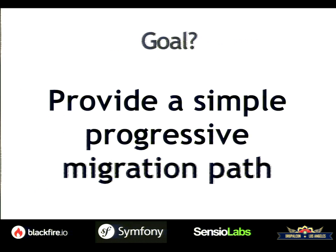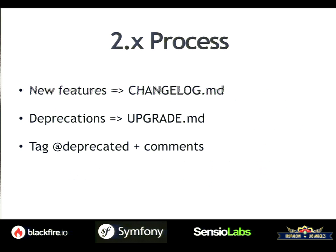We want to provide a simple migration path from 2.8 to 3.0. Whenever we add a new feature, we add it in the changelog. All the deprecations are also part of the upgrade file, which is how you upgrade from one version to the next. If you want to be compatible with 3.0, you can start today — just look at the upgrade file and make all the needed changes. We also add a @deprecated tag with comments about the new way of doing things directly in the code.